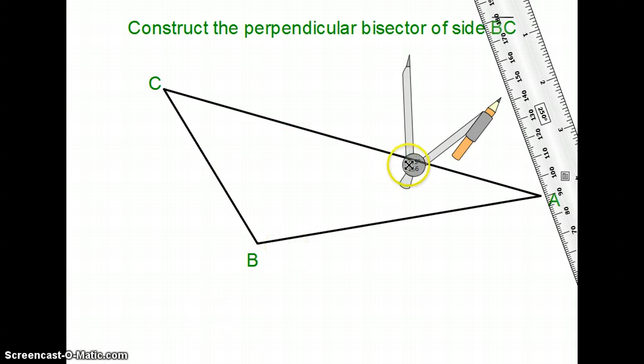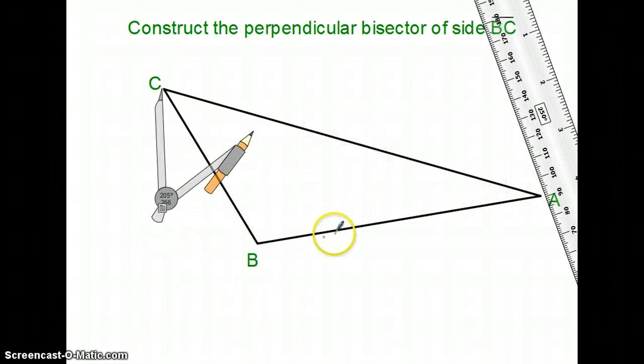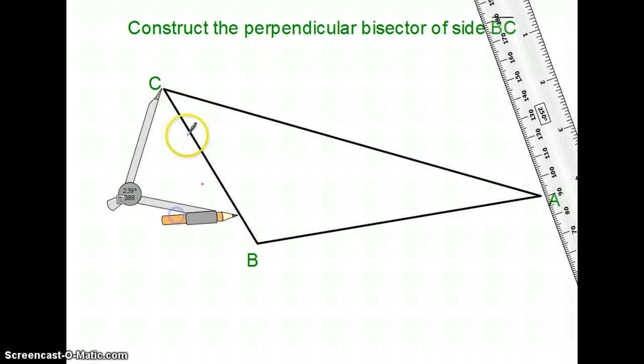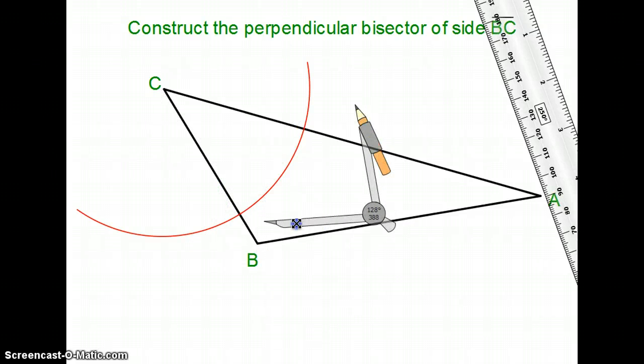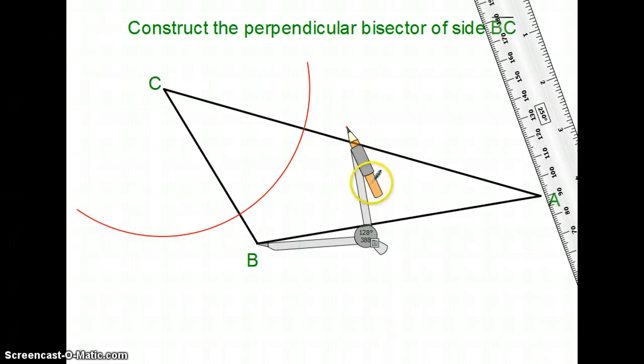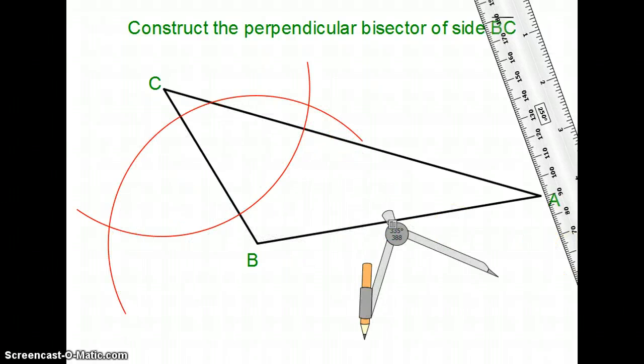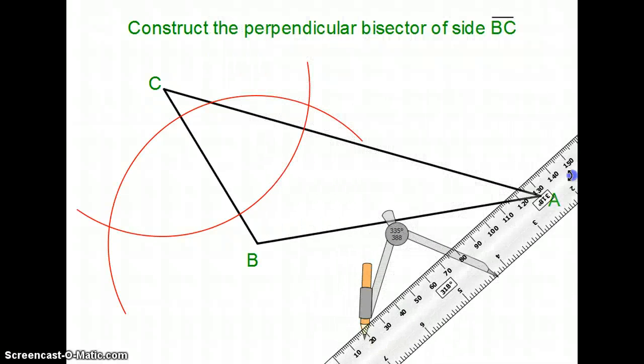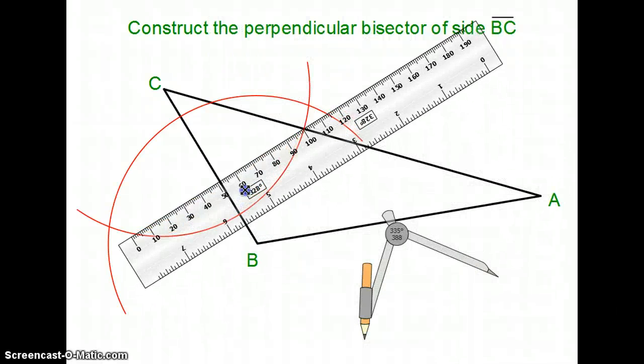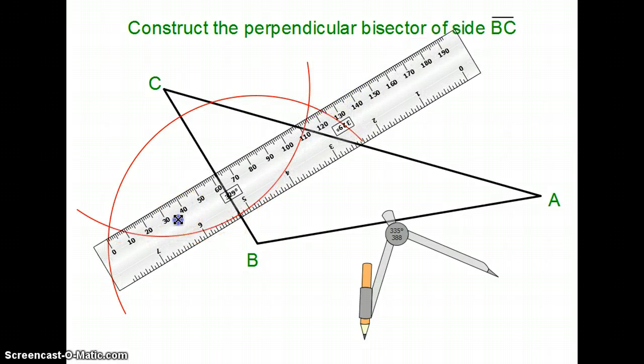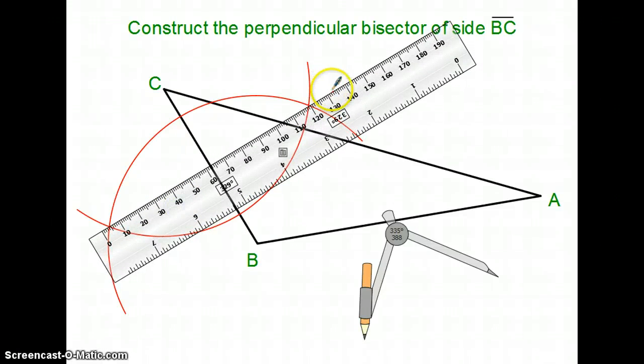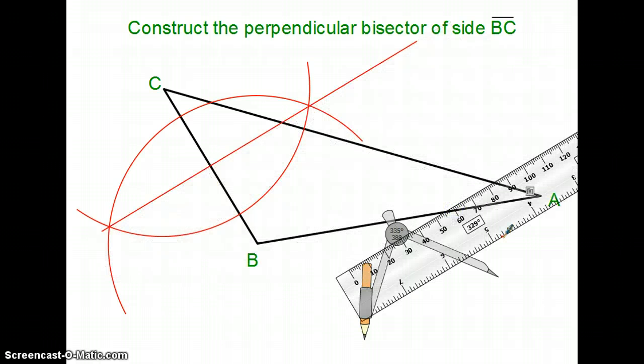Alright, okay. So I do my football on BC and I kind of just have to let my mind ignore everything else in this picture and just focus on this segment here. Okay, make my compass clearly bigger than half. Swoop around where I think that path is going to go. Stab at B, do the same thing. Alright, then connect the ends of my football. And that's all there is to it.